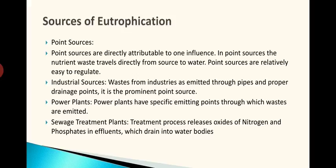In that case we can take corrective action. Point sources are directly attributable to one influence; the nutrient waste travels directly from source to water and are relatively easy to regulate. The main point source is the industrial source — waste from industries is emitted through pipes and proper drainage points. Another point source is the power plant, which has specific emitting points through which wastes are emitted.